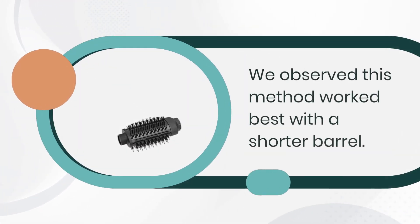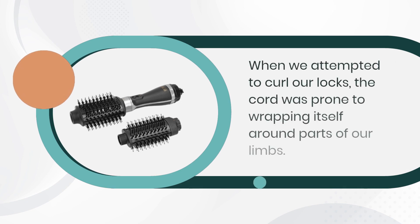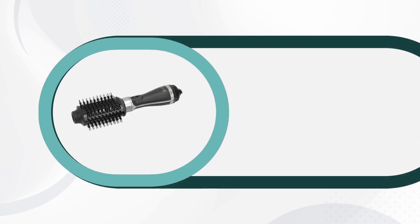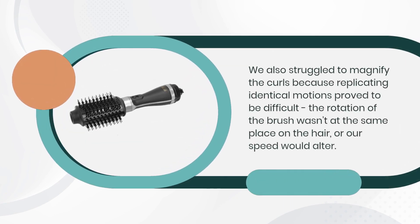We observed this method worked best with a shorter barrel. When we attempted to curl our locks, the cord was prone to wrapping itself around parts of our limbs. We also struggled to magnify the curls because replicating identical motions proved to be difficult, the rotation of the brush wasn't at the same place on the hair, or our speed would alter.